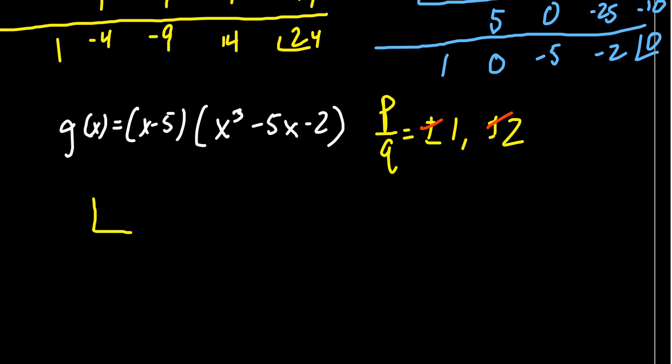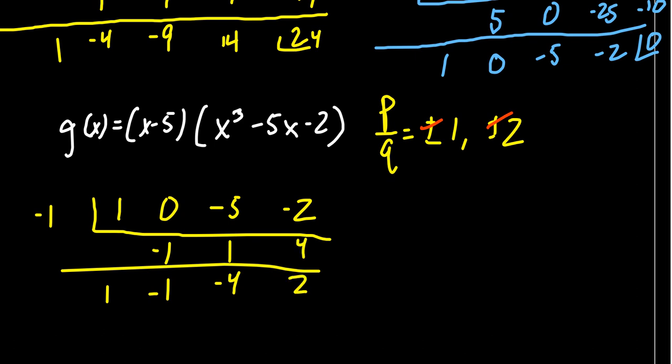So we now do the depressed polynomial. We're going to do 1, 0. Don't forget that there was a quadratic there. Some people actually just continue on from here if you want to. 1, 0, -5, -2. We're going to try -1 this time. Bring down the 1. 1 times -1 is -1 plus 0 is -1 times -1 is 1 minus 5 is -4 times -1 is 4 minus 2 is 2. So -1 didn't work. Let's try -2.